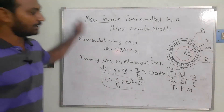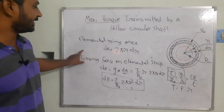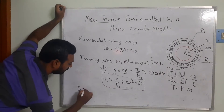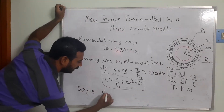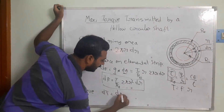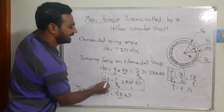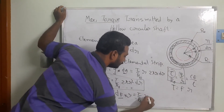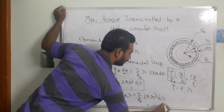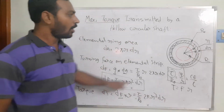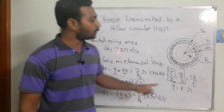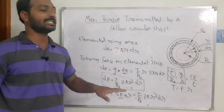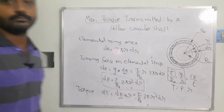The torque acting on the elemental ring is dT = df·r. Substituting the expression for df, we get dT = (τ/R_naught)·2πr³·dr. Now to find the total torque on the shaft, we integrate this expression with respect to r from the inner radius R_i to the outer radius R_naught.